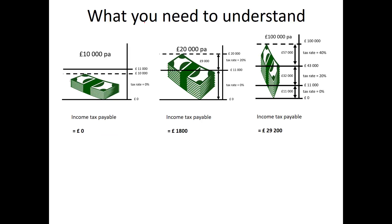Let's look at these numbers in more detail. The person on £10,000 per annum pays no tax, so their average tax rate is 0%. The person on £20,000 pays £1,800 out of £20,000 — working that out as a percentage gives an average tax rate of 9%. That's much less than the 20% rate at which they're being charged, because 20% doesn't apply to every penny they earn. This figure is called the average tax rate, and it's a very useful way of comparing the amount of tax different people pay.